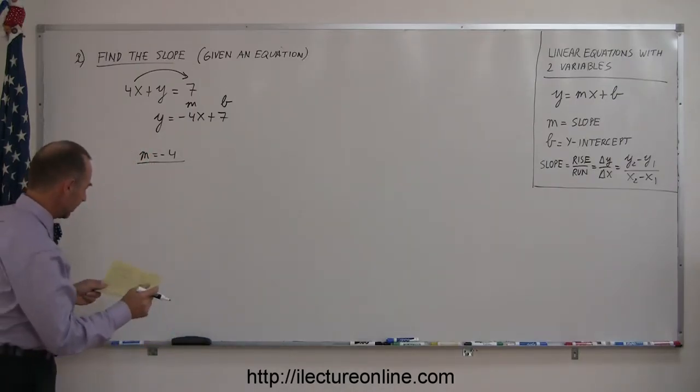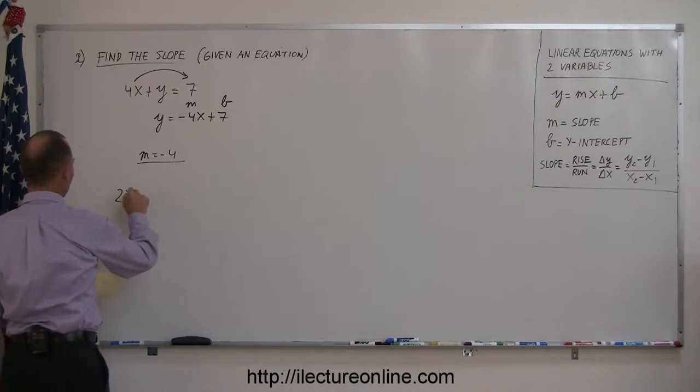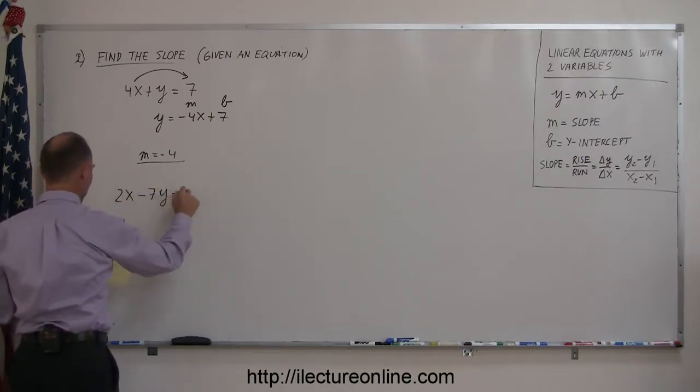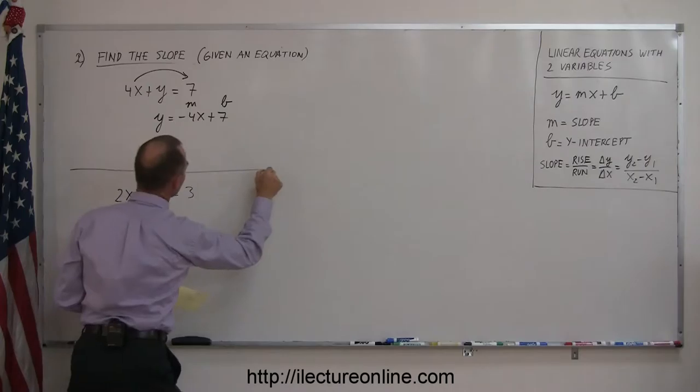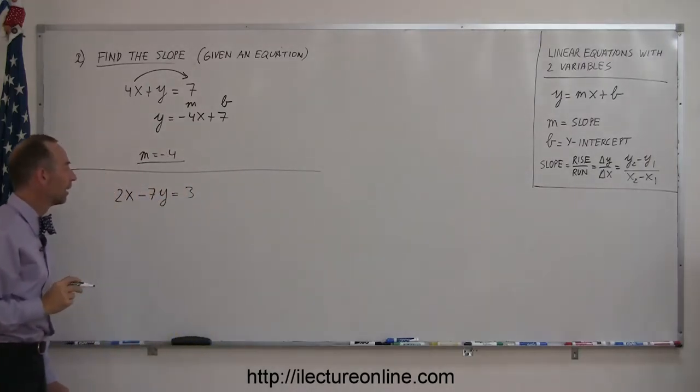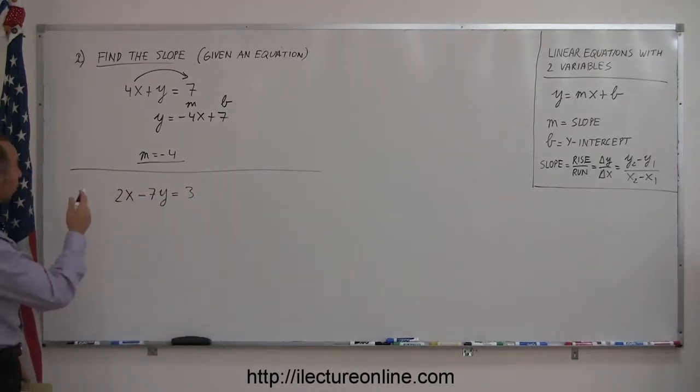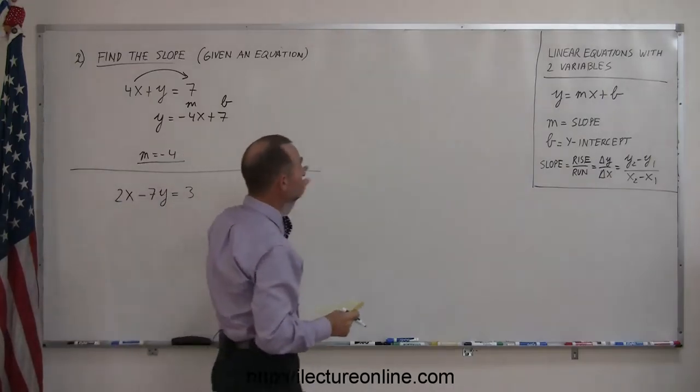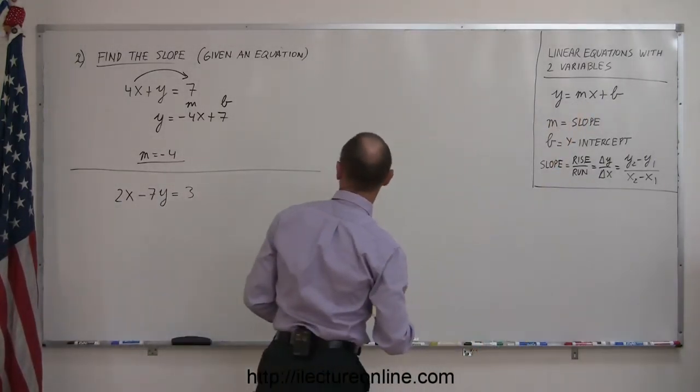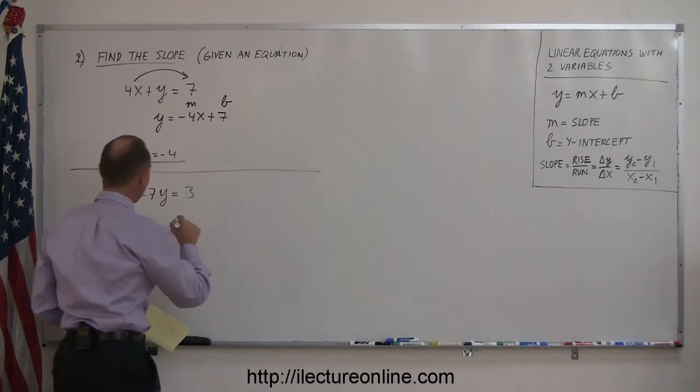What if you get an equation like this? 2x minus 7y equals 3. Let's put a line there so we don't get those two confused. Again, to find the slope, what you want to do is put the equation you were given in this exact format, meaning you want the y on the left side and everything else on the right side. So, let's move the 2x over here.